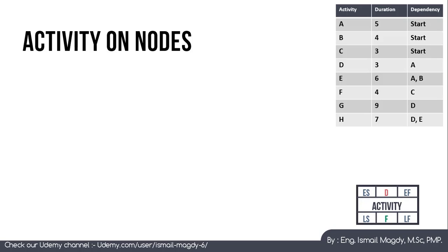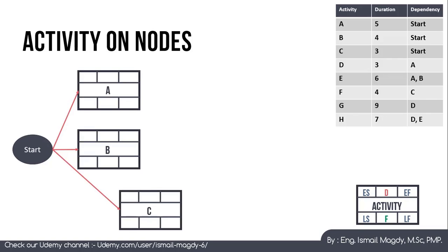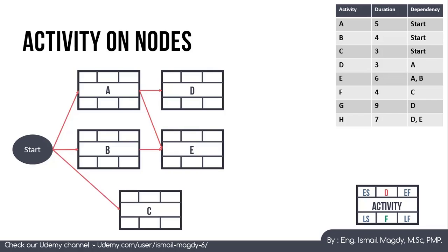Now let's work through an example. We have a table listing activities with their durations and dependencies. We need to determine the critical path, the project's overall duration, and the float for each activity. We start by plotting activities and dependencies. Activities A, B, and C all depend only on the project start. Activity D depends on A only, and activity E depends on both A and B. Activity F depends on C.